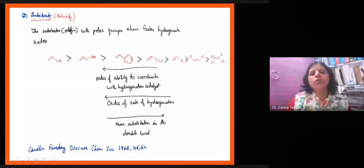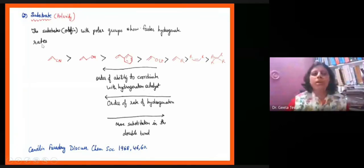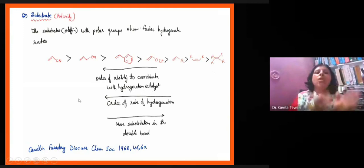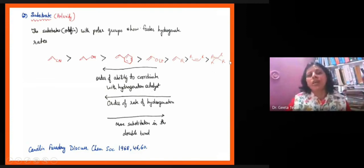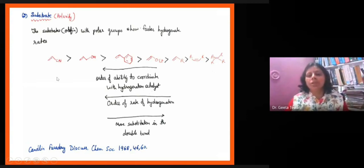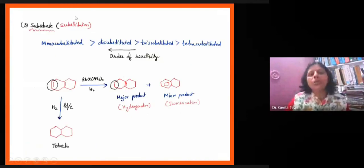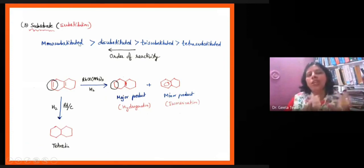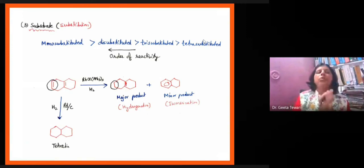Next we look at the polarity of the substrate. As we look at the polarity of olefins, the more polarized olefins react faster, meaning catalytic hydrogenation will be easier. If we look at the substrate substitution pattern — mono-substituted olefins are hydrogenated fastest, then di-substituted, then tri-substituted, then tetra-substituted. The rate depends on the substitution of the substrate.